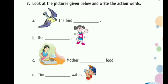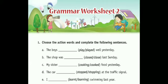Now let's review the action words. We have fly and flies. For one bird we say the bird flies — F-L-I-E-S. The bird — what does it do? Fly. The bird flies.